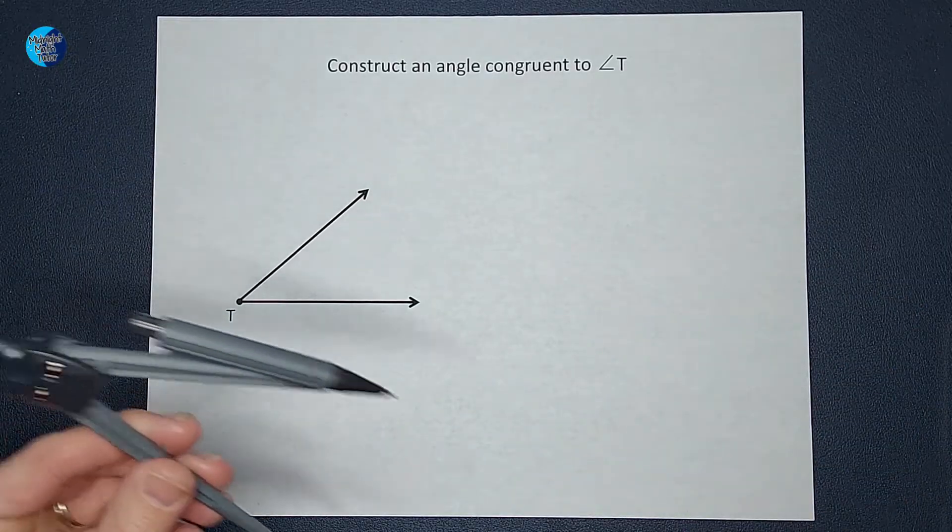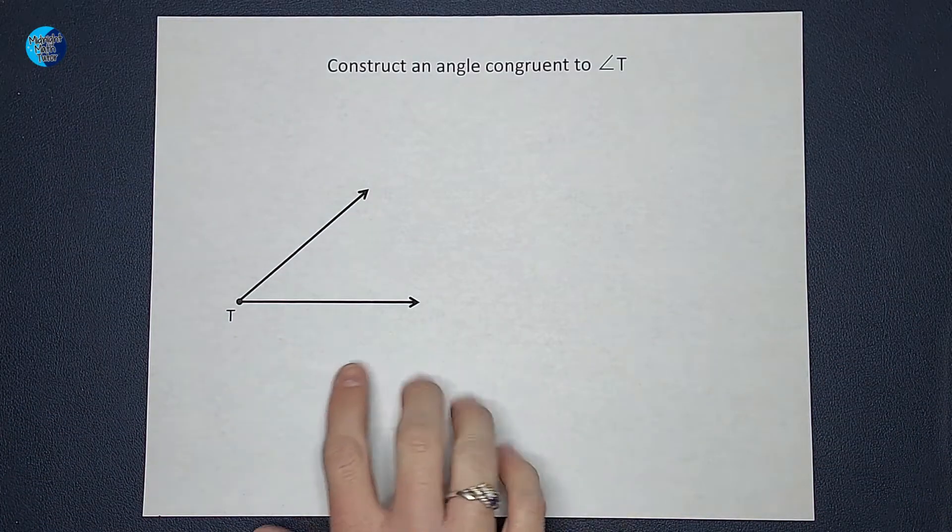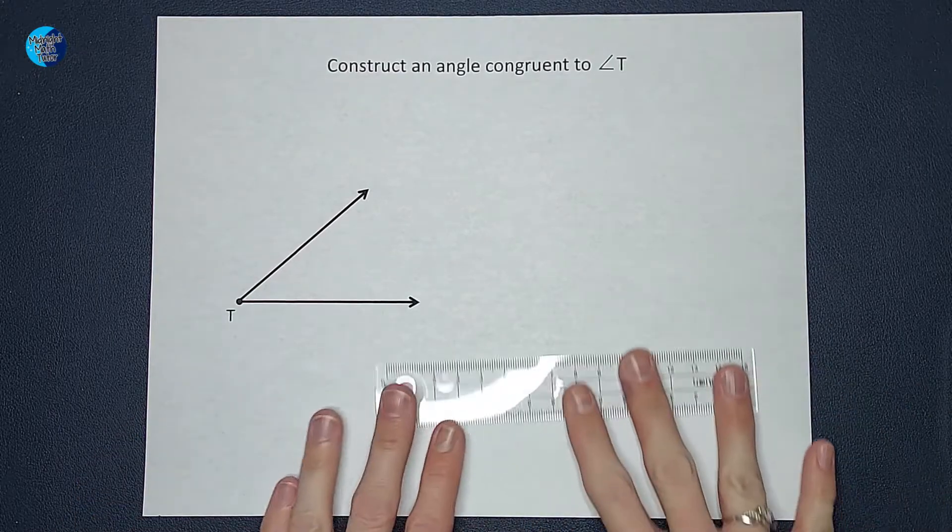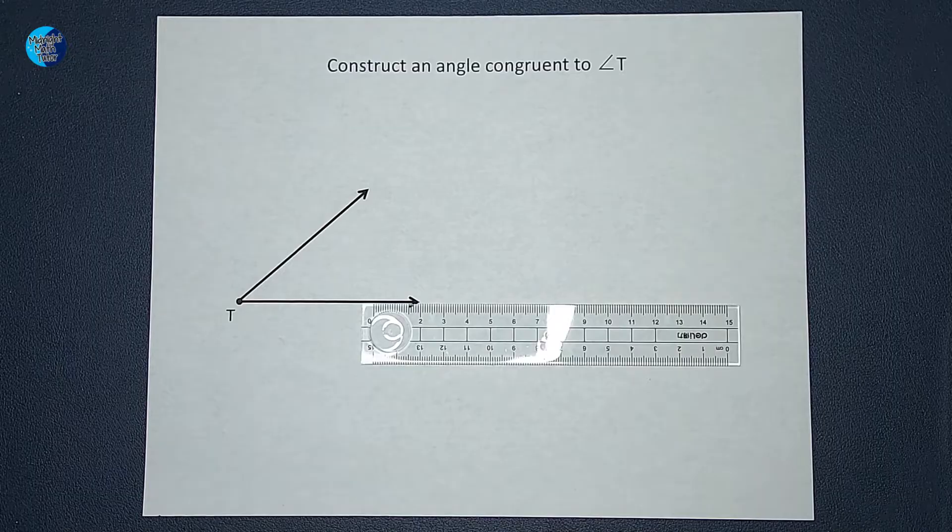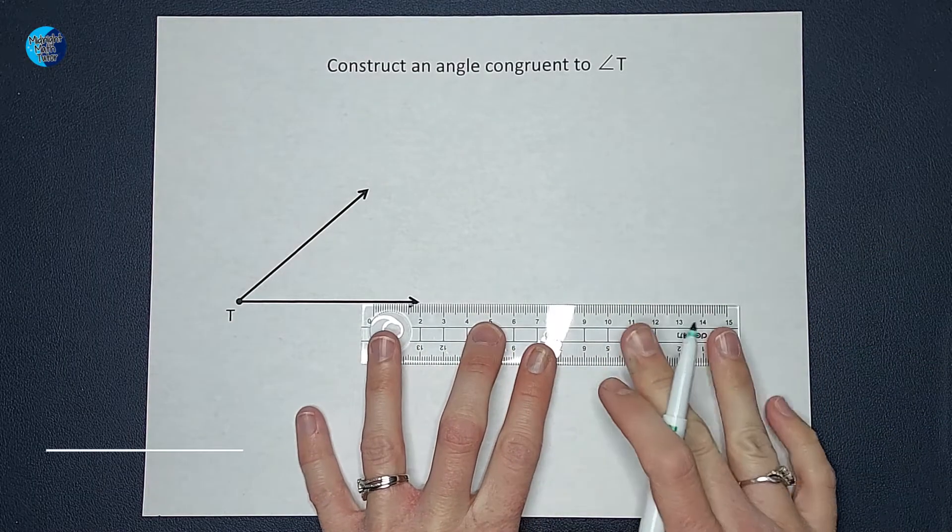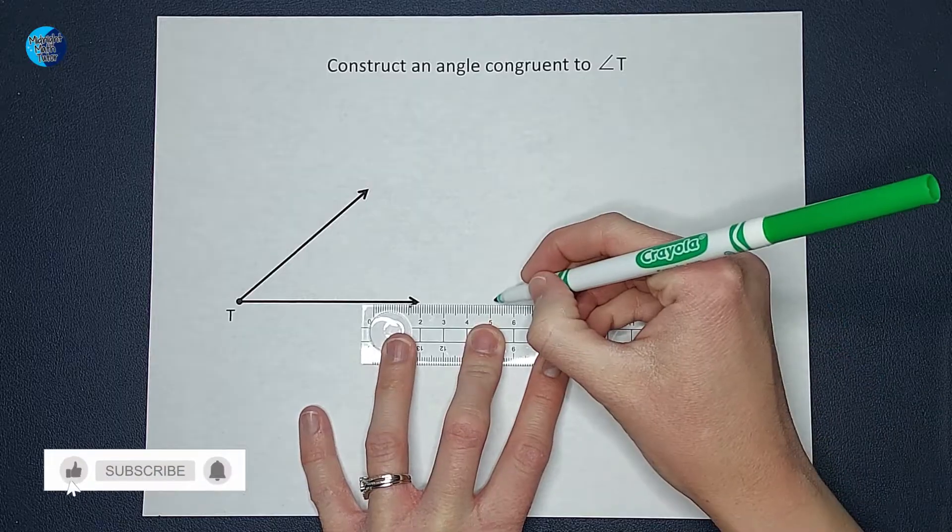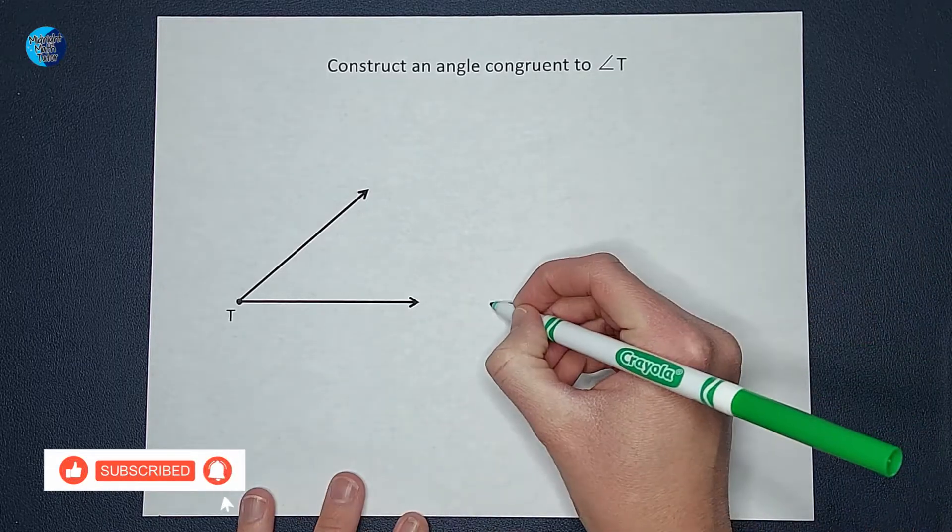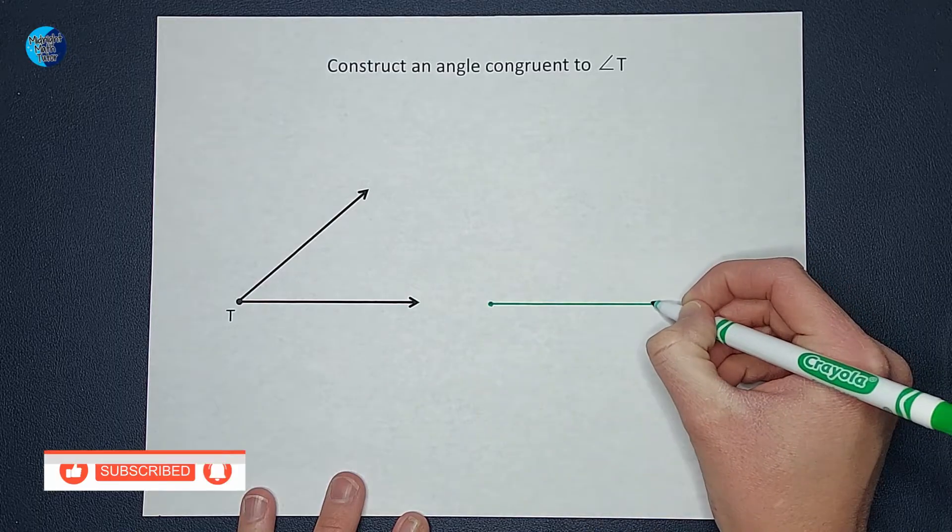So the first thing we are going to do is we are going to create a ray, which is going to be the bottom here. So I'm going to have it line up. It doesn't have to, but that just kind of helps my brain. So I am going to have a point and have it come over just like that.